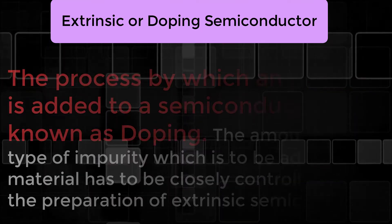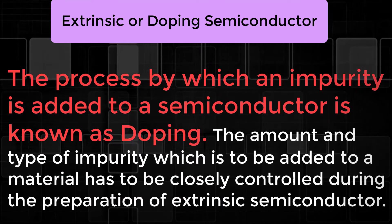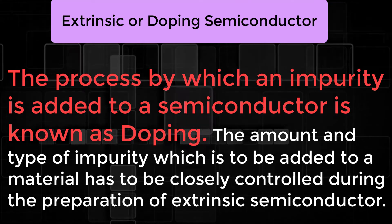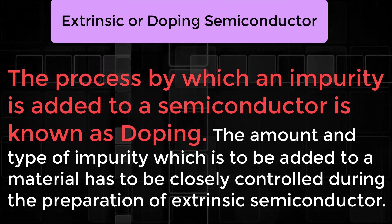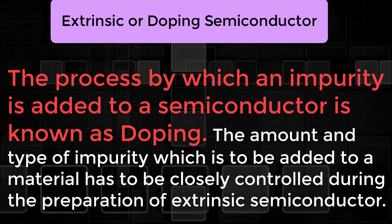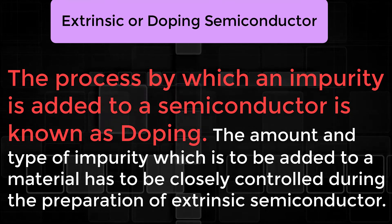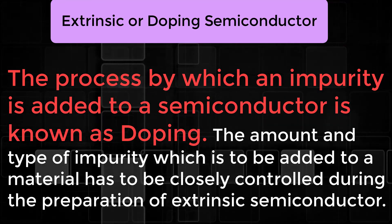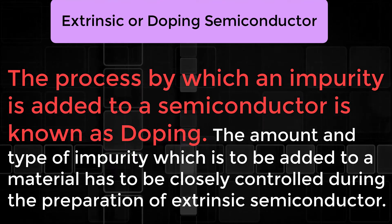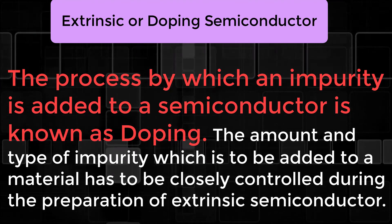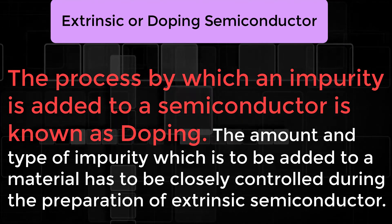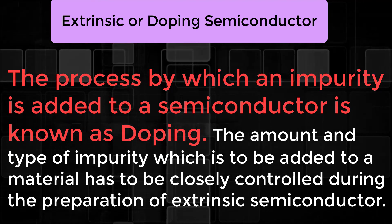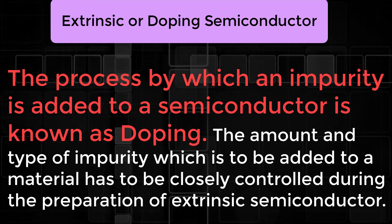Thus, to make it conductive, a small amount of suitable impurity is added to the material. The process by which an impurity is added to the semiconductor is known as doping. The amount and type of impurity which is to be added has to be closely controlled during the preparation of the extrinsic semiconductor.